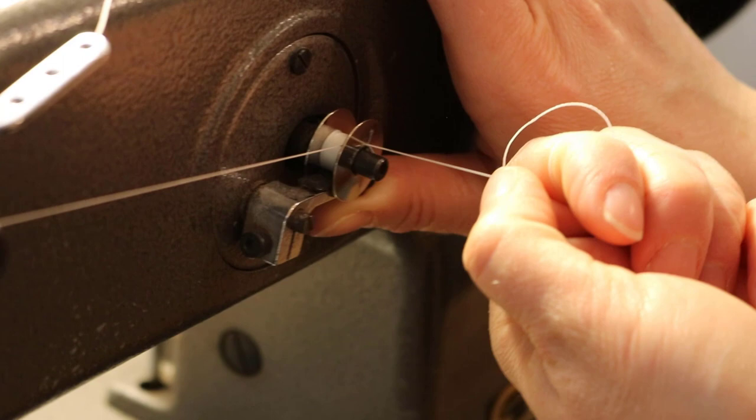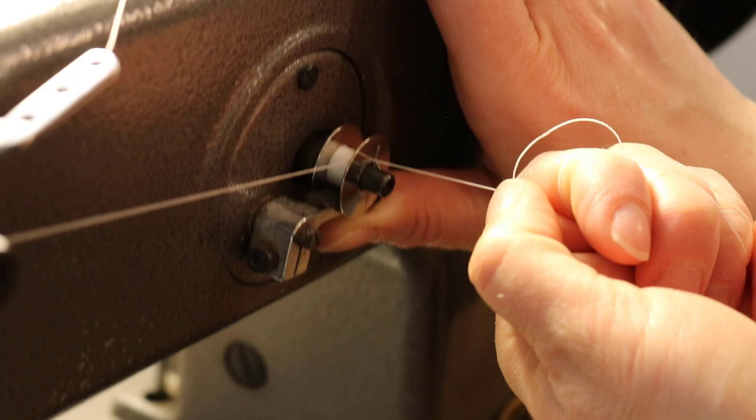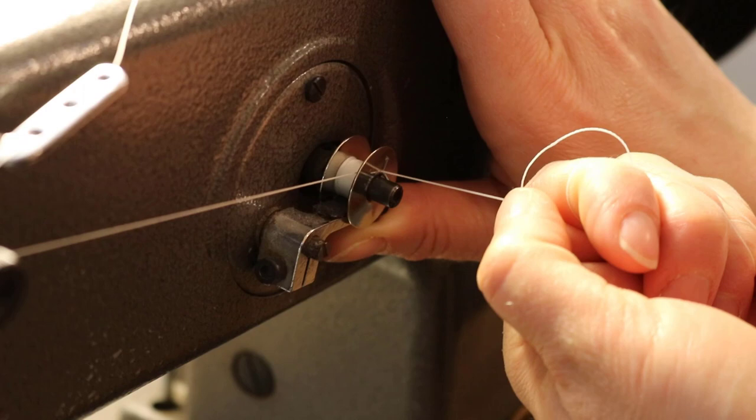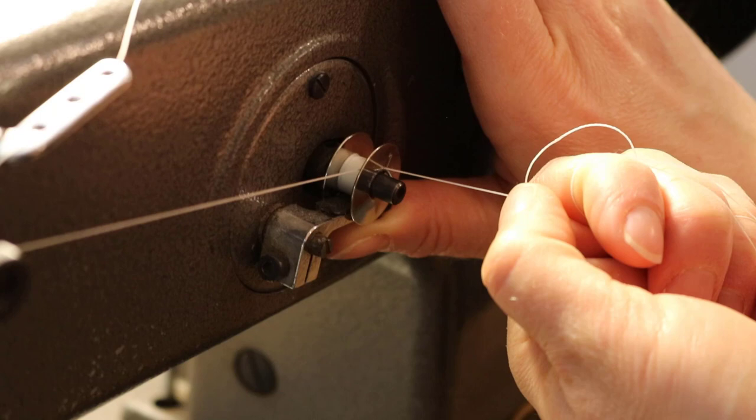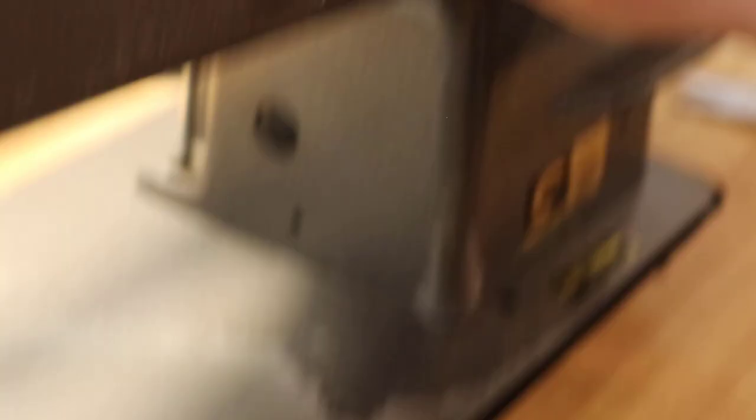My right hand is holding the tensioning bar on the bobbin winder. My left hand is holding the thread taut until it snaps. My right leg is running the foot pedal and it is also pushing on the leg lever to hold the walking foot in the upright position so that it doesn't hit the throat plate while I'm winding the bobbins. So the only thing that's not working right now is my left leg which is just sitting there.